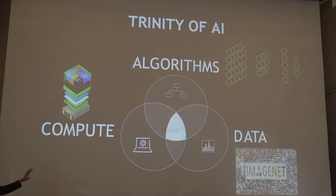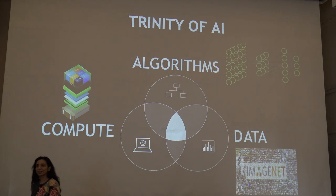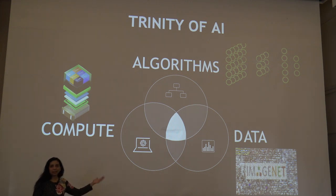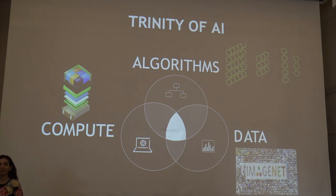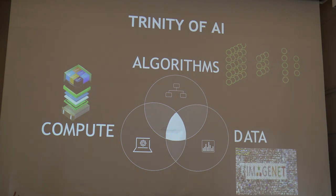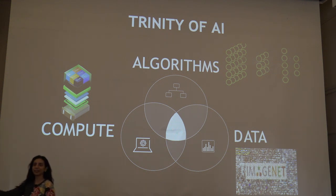Compute is especially important in robotics or edge computing applications where you have limited computation, battery, and other constraints. With the deep learning revolution, these three ingredients came together in a very synergistic manner. Neural networks have been around since the 50s, but until recently there wasn't enough data or compute. Even the world's most powerful supercomputer in the 80s was less powerful than our iPhones now. That growth in computation has been critical for large-scale models. The creation of the internet and datasets like ImageNet also provided enough supervised data to get deep learning to work well.